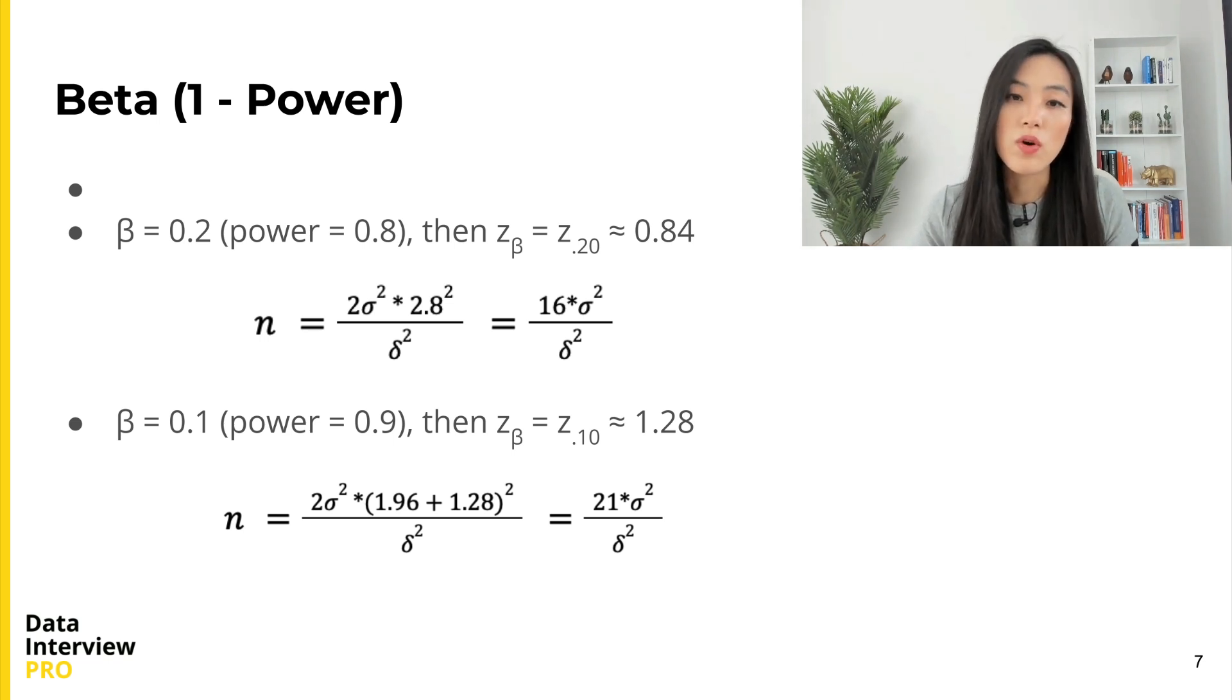So increasing β means decreasing power and vice versa. Power is often set to 0.8 in practice, which means β is 0.2. Let's say we want to increase power to 0.9, then β becomes 0.1. In this case, z_β is 1.28, which is larger than 0.84 when β is 0.2, and the coefficient increases from 16 to 21.